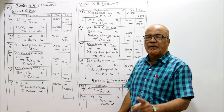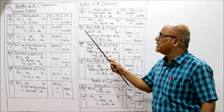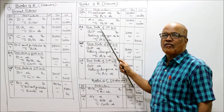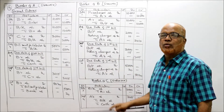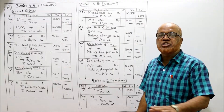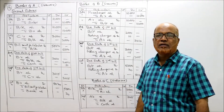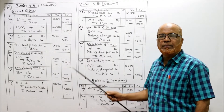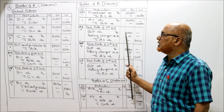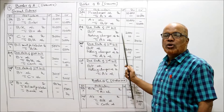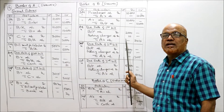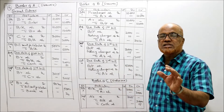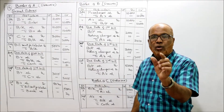The due date of the first bill is August 4th. On that due date the first bill is dishonored. Entry: bills payable account debit 2,000, noting charges account debit 10 rupees.